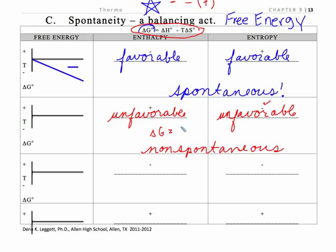If delta G is a positive minus a negative, right? T is always positive. Temperatures in Kelvin, it's always positive. So, a positive minus a negative is going to give us that always positive situation here. So, now we have the sign of our free energy that's giving us our spontaneity. If delta G is negative, it's spontaneous. If delta G is positive, it's non-spontaneous.